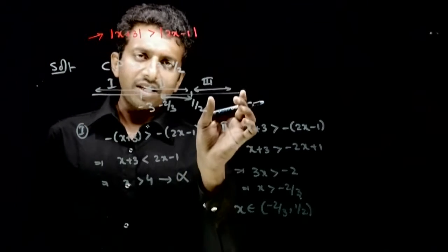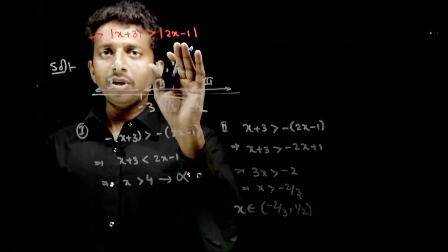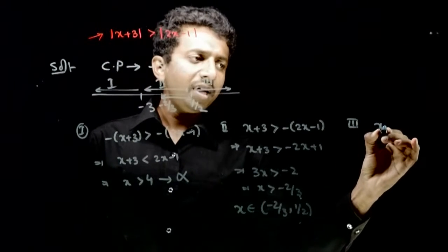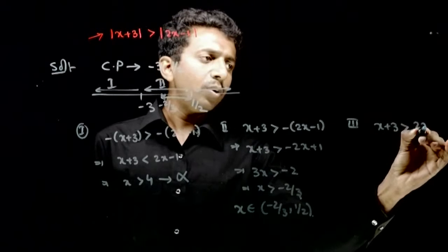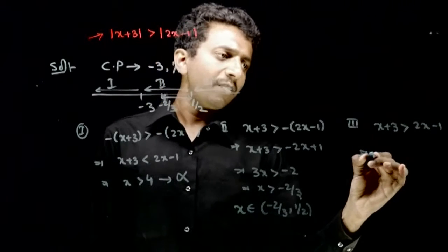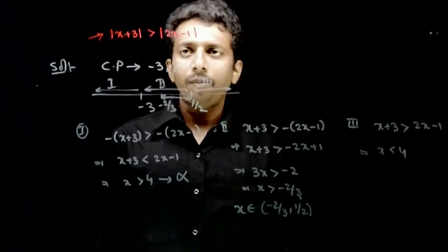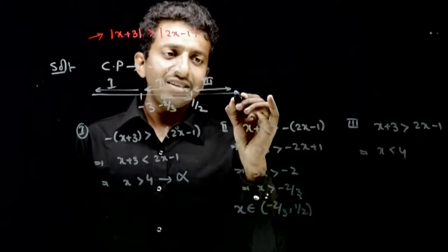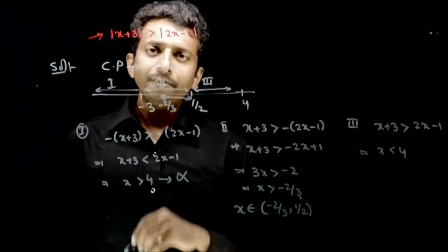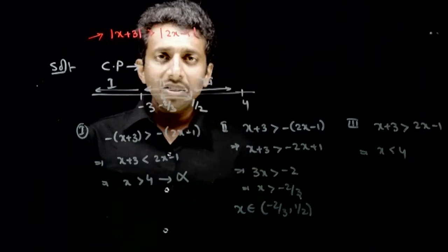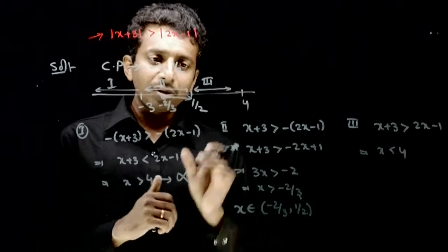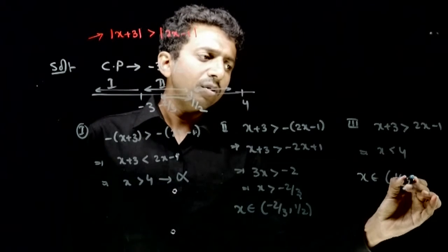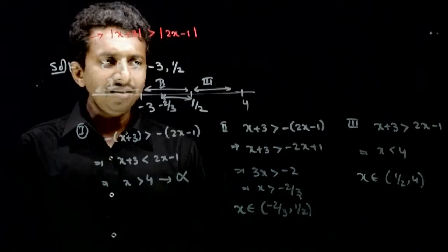In the 3rd interval, x is greater than half. Both expressions are positive here, so the inequality becomes: x plus 3 is greater than 2x minus 1, which implies x is less than 4. So, as long as x is less than 4, the inequality is valid. Therefore, x belongs to (half, 4) is the solution in this interval.